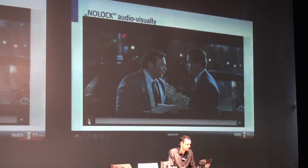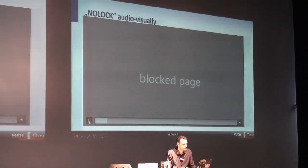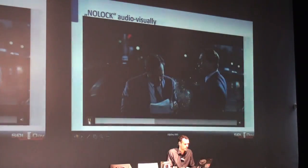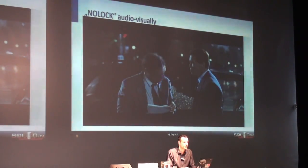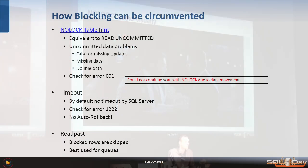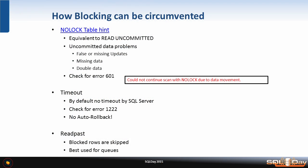How can we get around nasty blocking? There are several ways. The brutal method is the NOLOCK table hint — just give me the data whatever condition it is right now. It's actually the same as setting the transaction isolation level to READ UNCOMMITTED — exactly the same behavior. Give me uncommitted data. Everybody knows you can have false or missing updates with dirty reads.